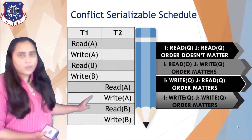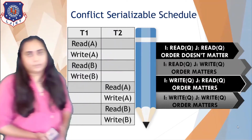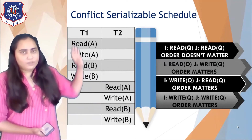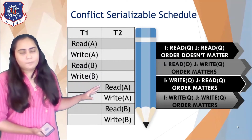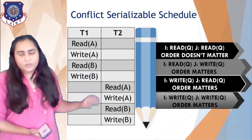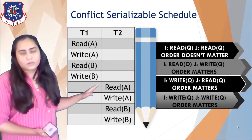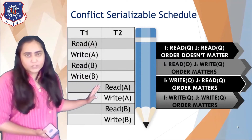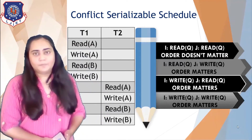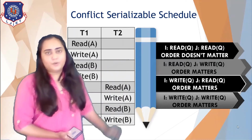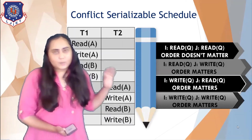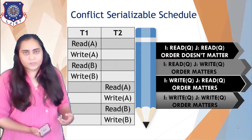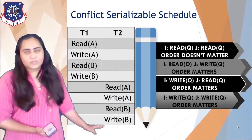What you see now is a conflict serializable schedule. The schedule we began with had both transactions happening together, but I was able to convert it into a serial schedule where one transaction finishes before another starts. All this was done by applying the four rules, which is why we say the original schedule was conflict serializable.